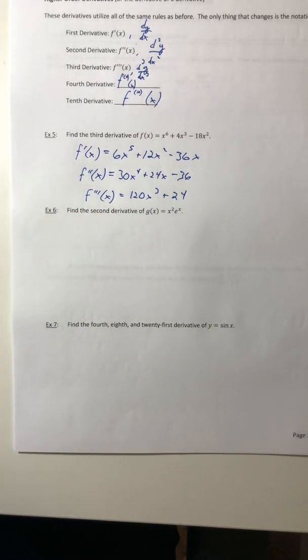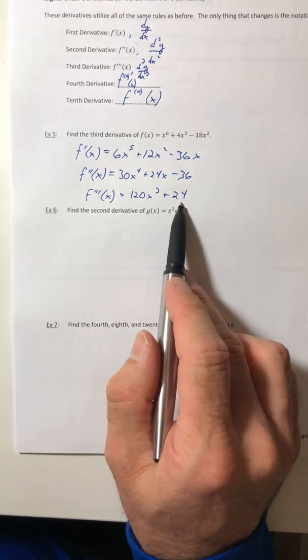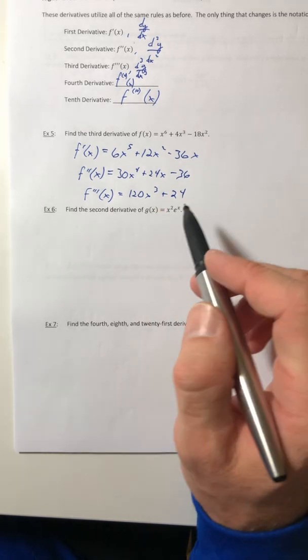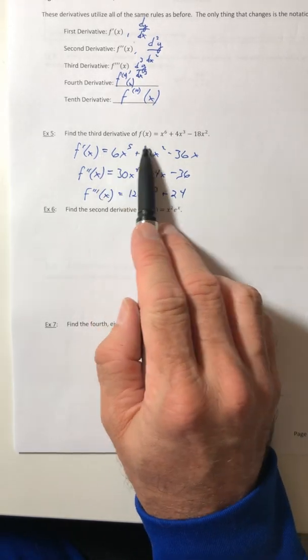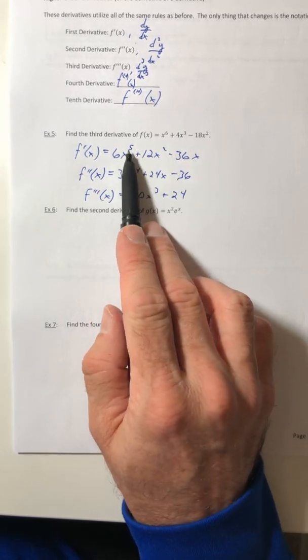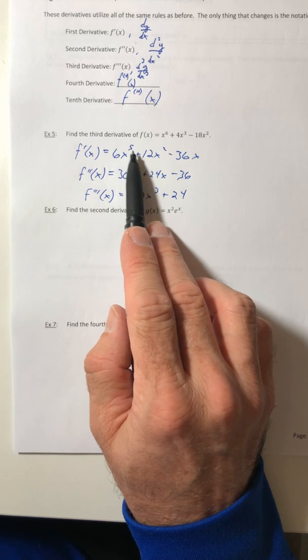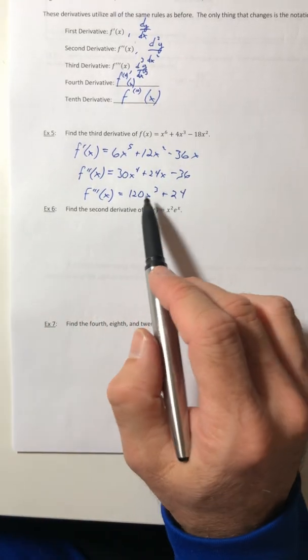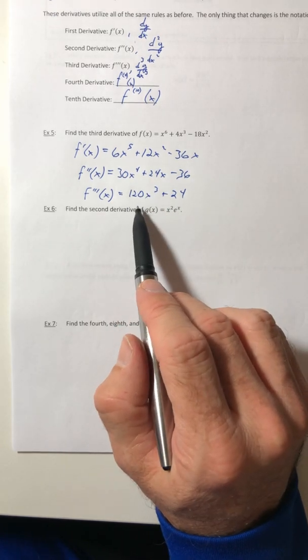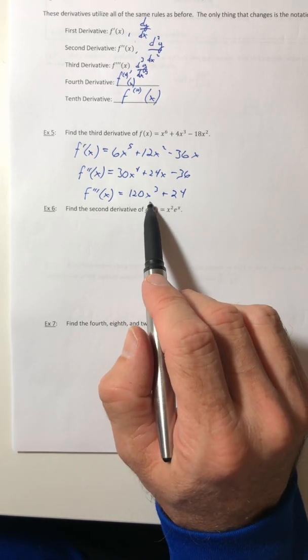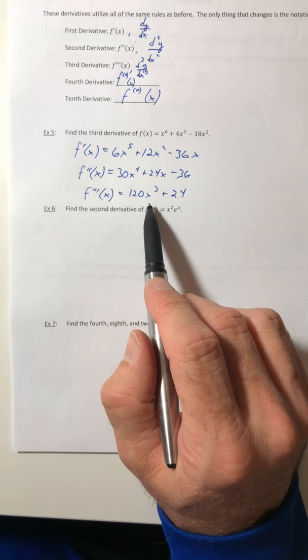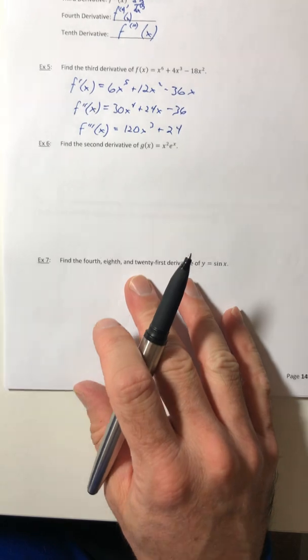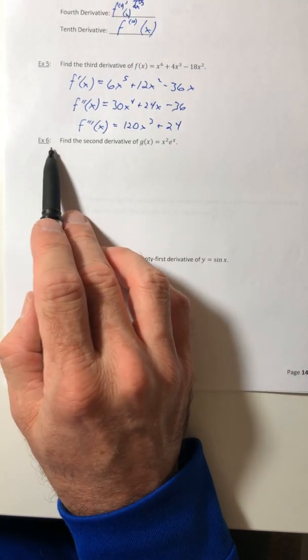So polynomials are kind of interesting because eventually they're going to get down to one of the derivatives is going to hit zero. Because if you notice, for polynomials, the powers or the degree decrease by one every single time you take a derivative. So eventually you're going to get to just a constant. And then all the derivatives from there would just actually be zero. Just a little FYI.